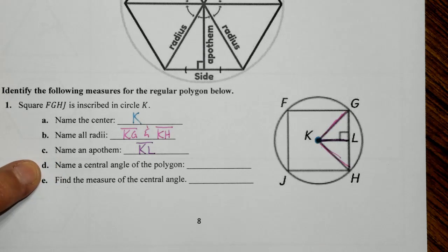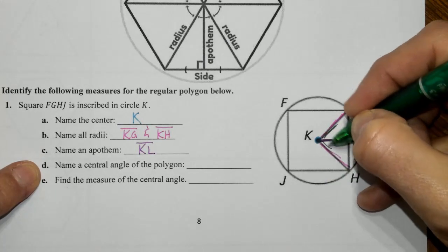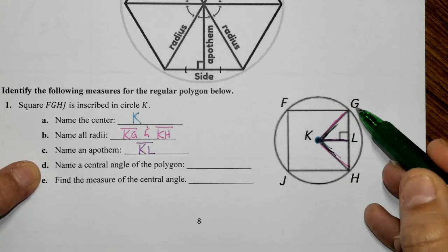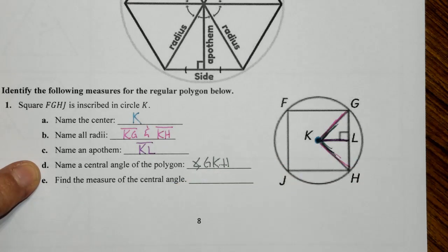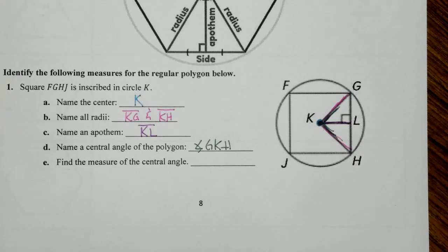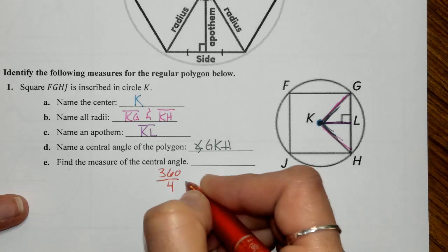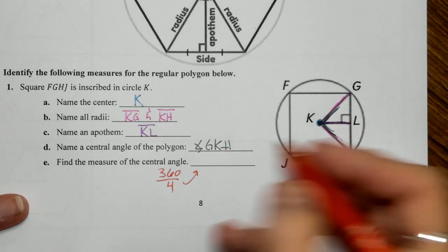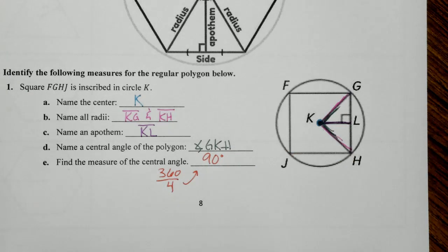Then we're going to name a central angle of the polygon. We'll grab angle GKH. To find the measure of the central angle, we take 360 degrees all the way around and divide it by the number of sides. This central angle will end up being 90 degrees. That's how we find the central angle.